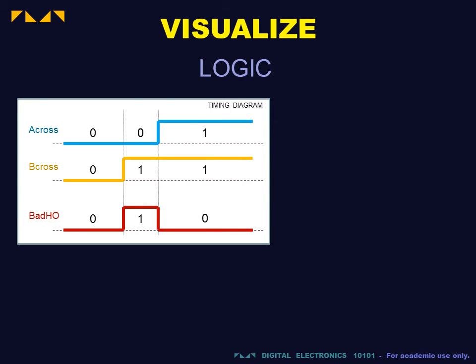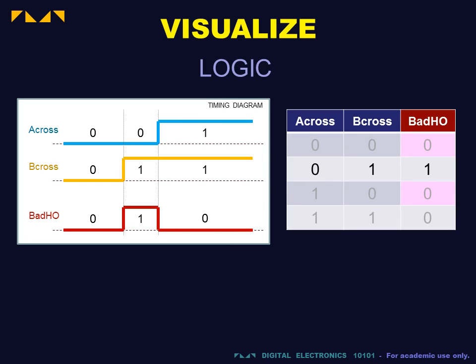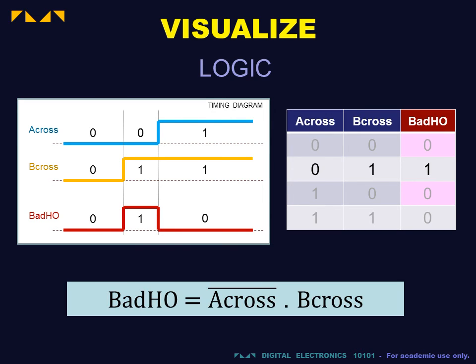A good way of determining the logic is to draw the truth table. In the table, we note that the output is 1 if and only if A cross is 0 and B cross is 1. In Boolean algebra, we write bad HO is equal to A cross bar and B cross.